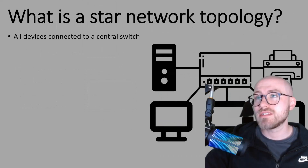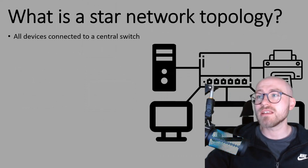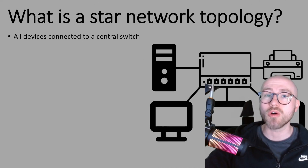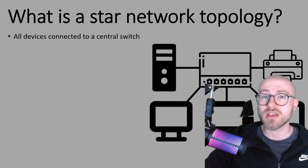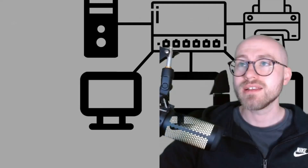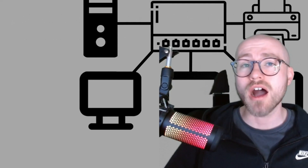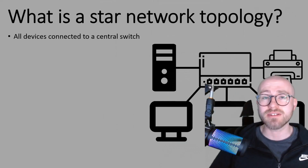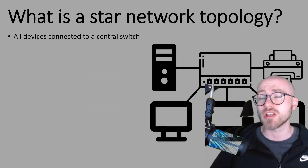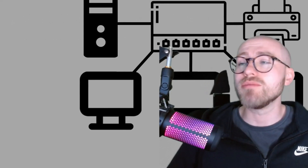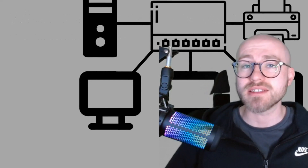The first one we're going to look at is the star network topology. A common mistake that a lot of people make is thinking the central device is the server, but that's not the case — the central device is what we call a switch or a hub. The switch is a piece of network hardware and all of your different devices, like your PCs and your printer, are all attached to your central switch, which allows communication between all of the different devices.